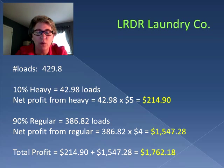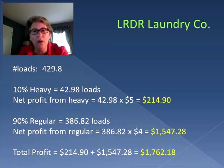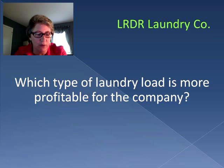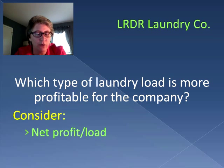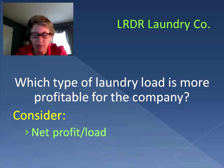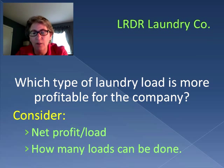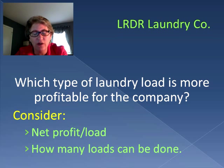Now we know how much we can earn per week with our existing capacity. But the question becomes: which type of laundry load is actually more profitable for the company? To figure this out, we have to consider two things: first, what is our net profit per load — heavy loads earn $5 and regular loads earn $4 — and second, how many loads of each type can actually be done based on our capacity.